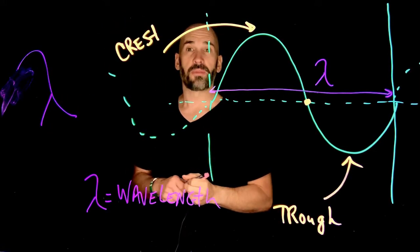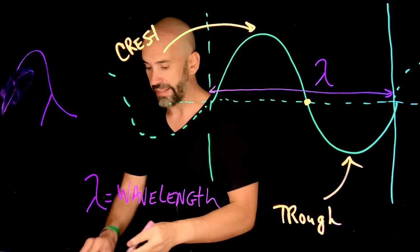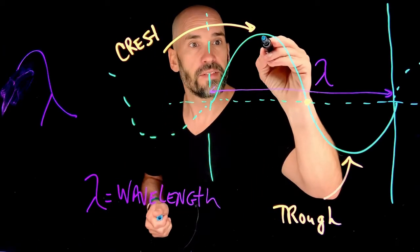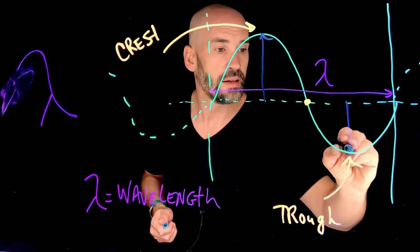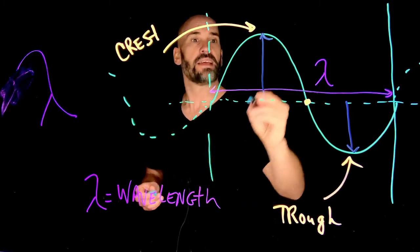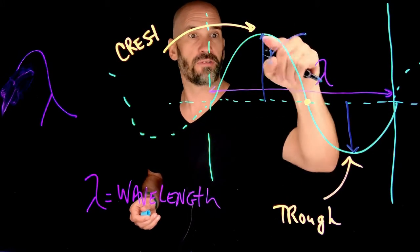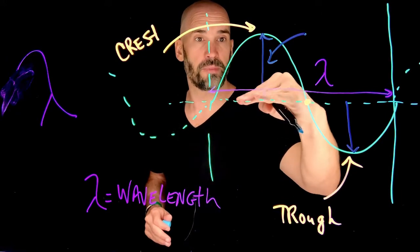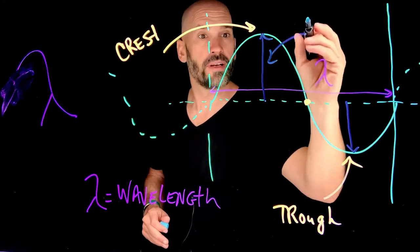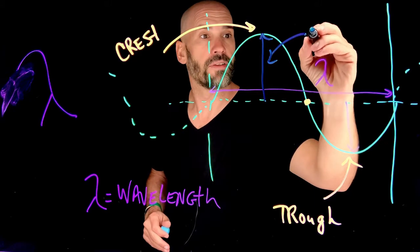There's also something called the amplitude. And the amplitude is the height of the wave as measured from the equilibrium position. One misconception is that people think the amplitude is from the crest all the way to the trough. No. It is just from the equilibrium position to the top. And so we have here the amplitude.